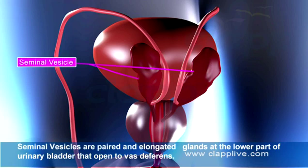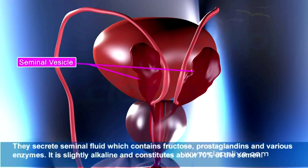Seminal vesicles are paired and elongated glands at the lower part of the urinary bladder that open to the vas deferens. They secrete seminal fluid, which contains fructose, prostaglandins, and various enzymes. It is slightly alkaline and constitutes about 70% of the semen.